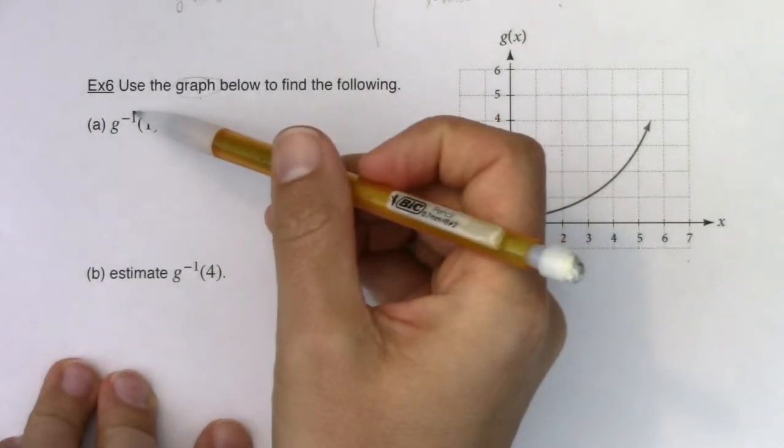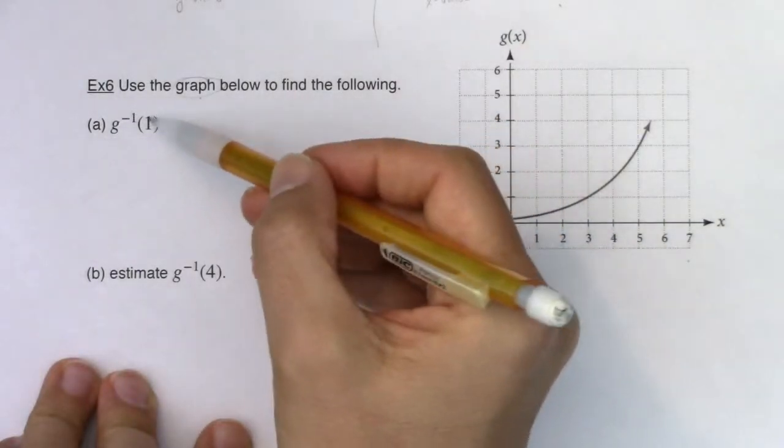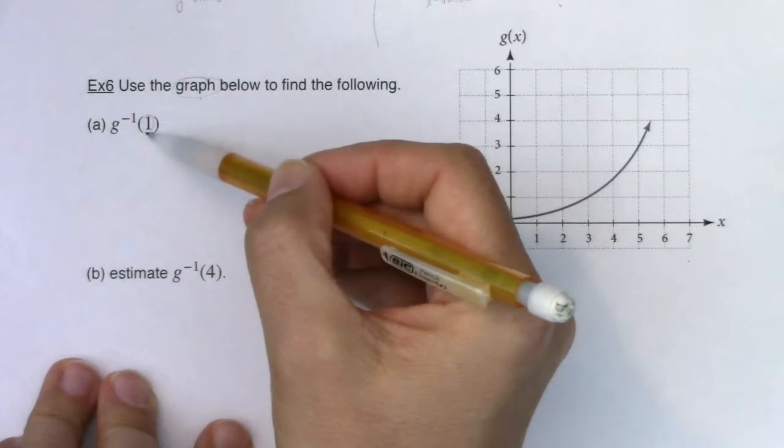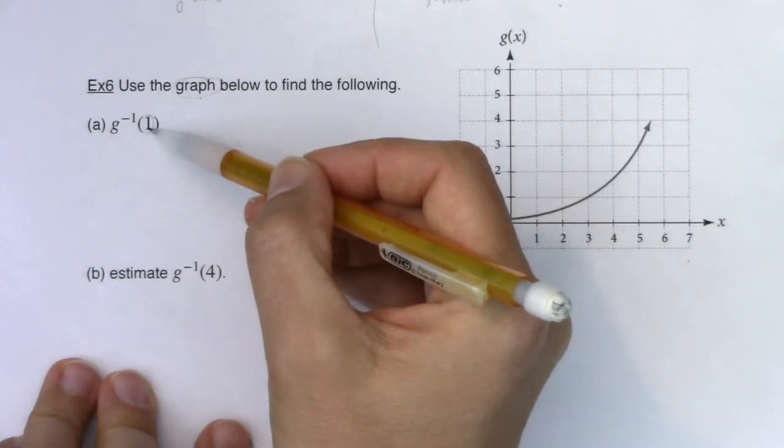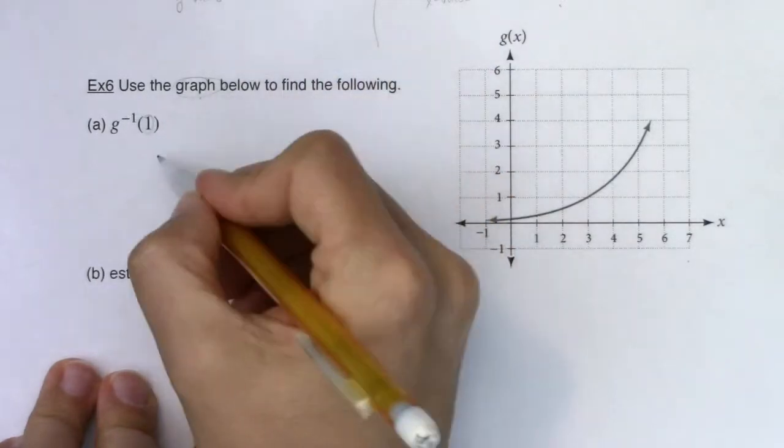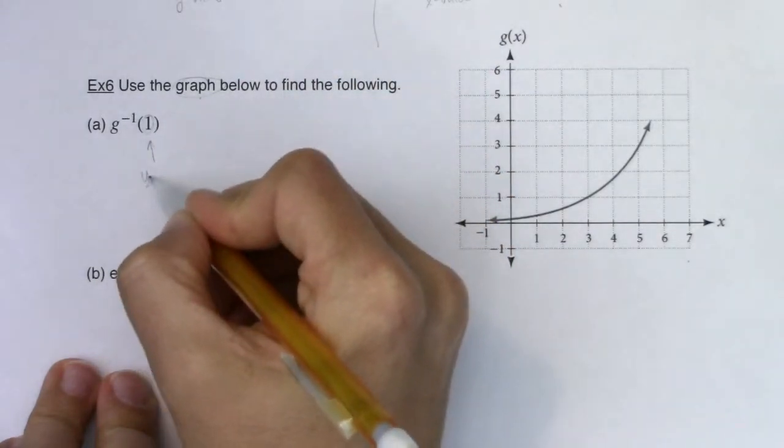Taking a look at this, I see g inverse. We have to decide: is the number inside this parentheses representing an x value or a y value? When it's attached to the inverse function, this is actually representing a y value.